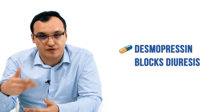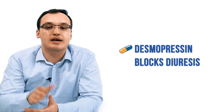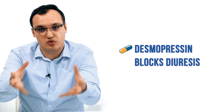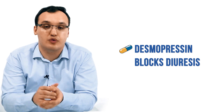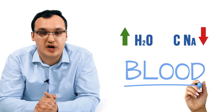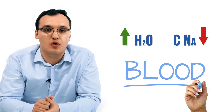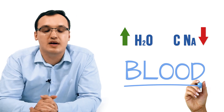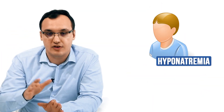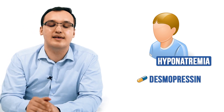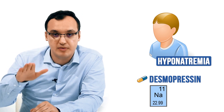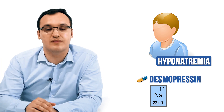Desmopressin blocks diuresis — the flushing out of water from your body through the kidneys. It will spare water, and if you spare water, the concentration of sodium decreases as you have an increased volume of water in the blood with the same number of sodium molecules. So we decrease the sodium again, going back to hyponatremia, and then slowly — together with desmopressin — we add some sodium very, very slowly using hypertonic 3% saline at a very reduced flow rate of about 15 milliliters per hour.